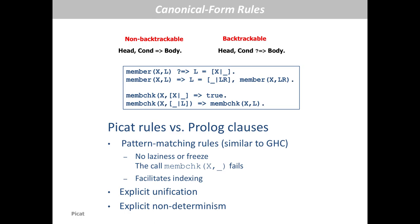In canonical form, all rules take this form. A rule is either backtrackable or not backtrackable. For a predicate call, if the call matches the head and satisfies the condition, then the call will be rewritten to the body. If the rule is not backtrackable, the rewriting is a commitment — if the body fails, you cannot backtrack. If the rule is backtrackable and the body fails, execution will be backtracked to the call, and an alternative rule can be tried.